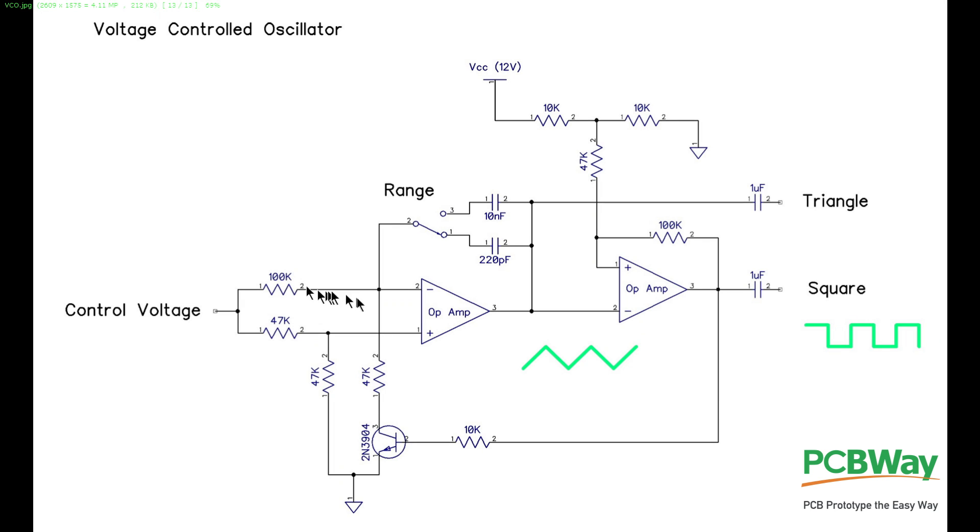So this one here will be then one third of the control voltage whereas this input here will be at half the control voltage. So that's going to cause this operational amplifier to turn on and charge up this capacitor through here and give us our ramp going up like this.